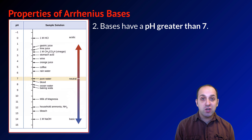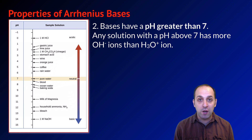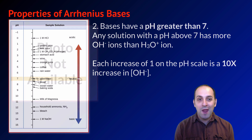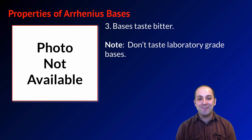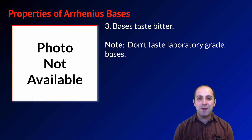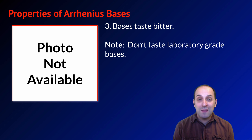In terms of pH, Arrhenius bases have a pH greater than 7. Any solution with a pH above 7 has more hydroxide ions than hydronium ions. Each increase of 1 on the pH scale is a 10-times increase in the concentration of hydroxide ions. In terms of taste, Arrhenius bases taste bitter — though of course, do not taste laboratory-grade bases.